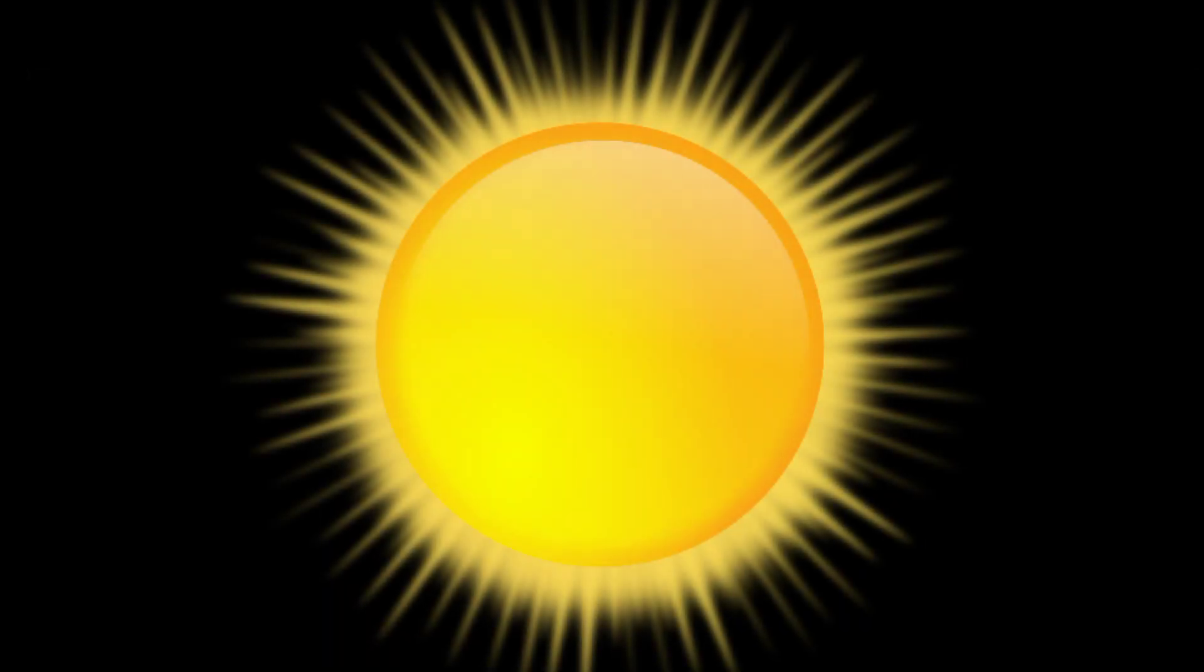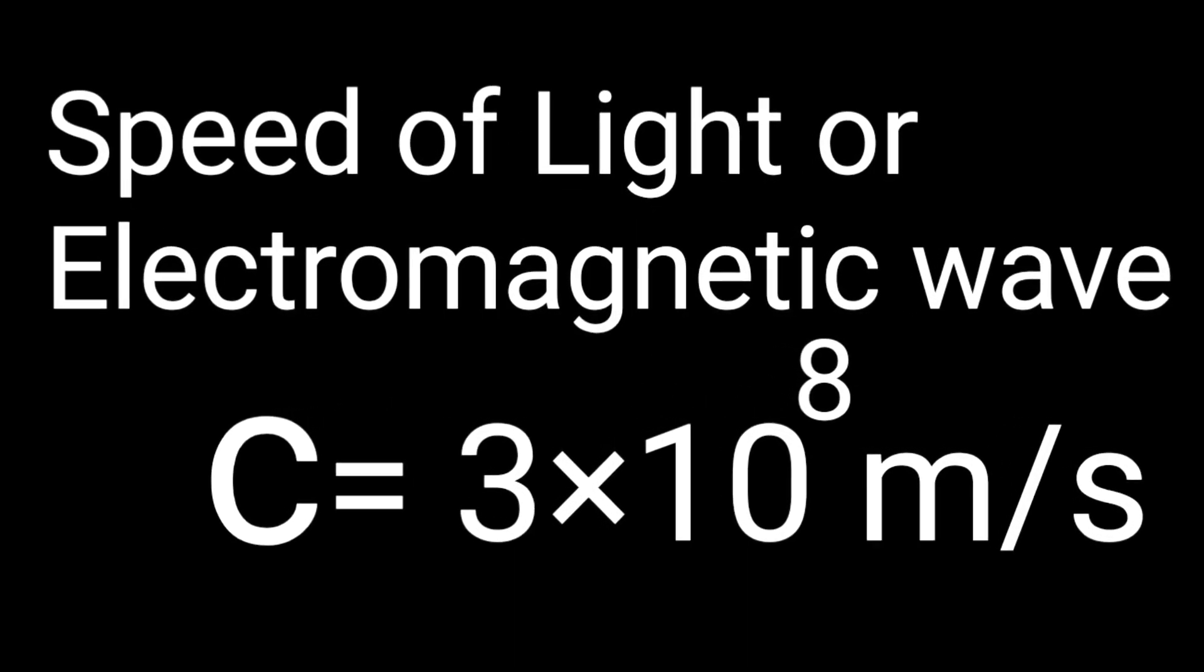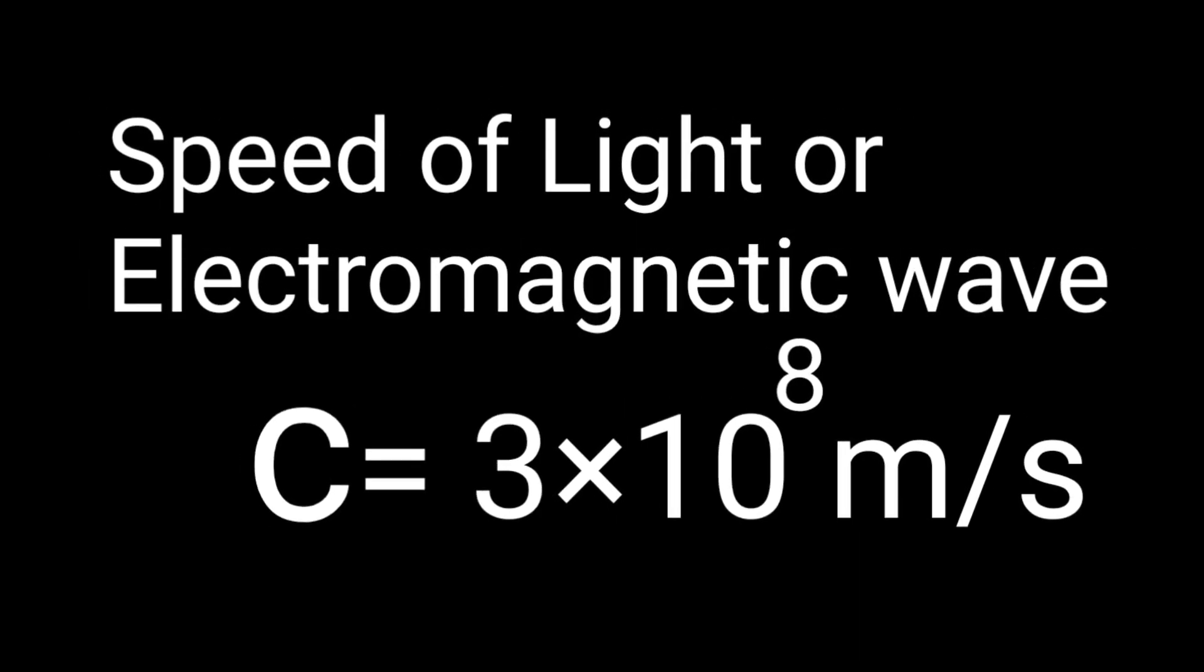The light coming from the sun is also an electromagnetic wave and the speed of light is 3 times 10 to the power of 8 meters per second.